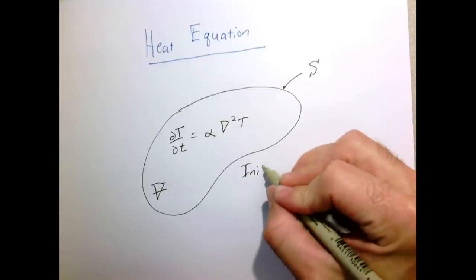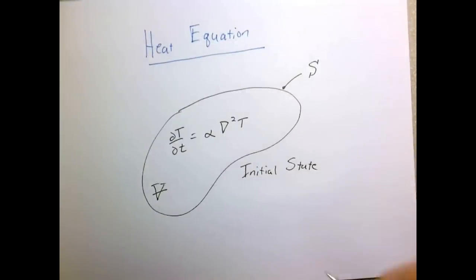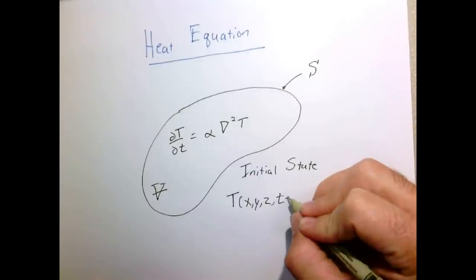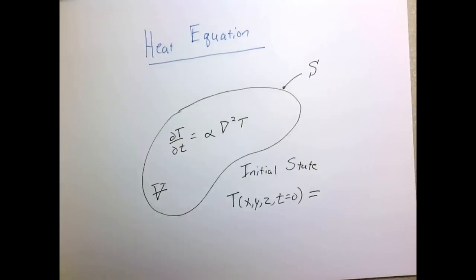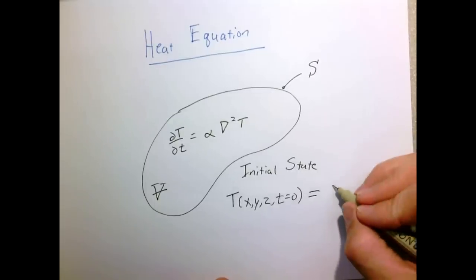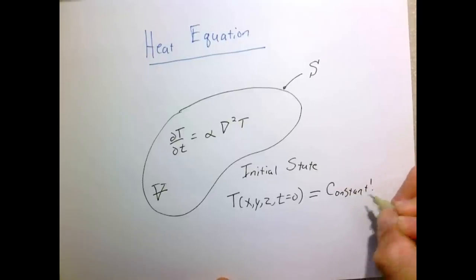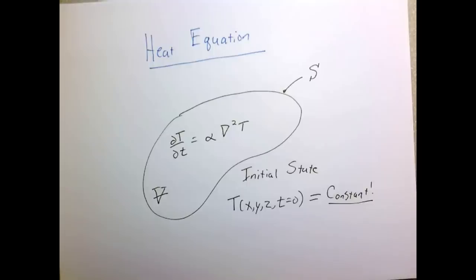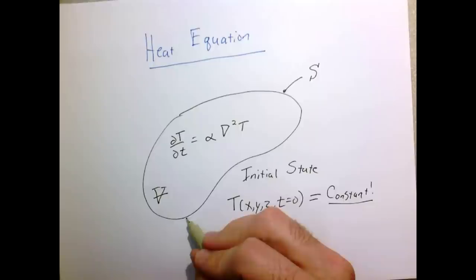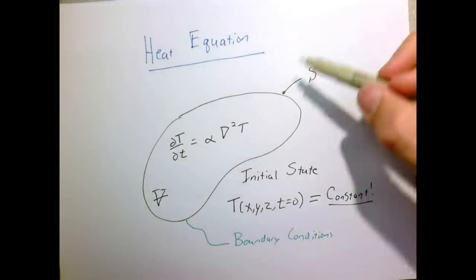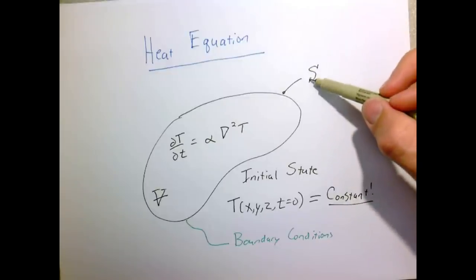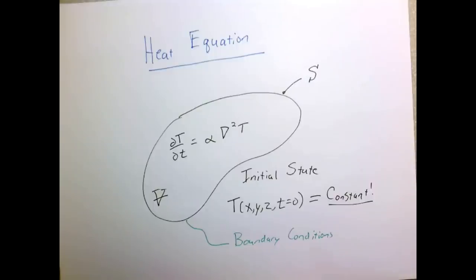In order to solve this equation, we need a couple of things. One is that we need the initial state. We might express this mathematically as the temperature as a function of x, y, and z at time equals zero is equal to something — some function that describes the temperature everywhere inside our volume. The most common thing we'll do is say that temperature is uniform everywhere initially, so that's simply a constant. The other thing we need is to describe what's happening everywhere on our boundary, so we'll need boundary conditions. The boundary conditions tell us how our solid is coupled to the universe around it, so everything outside our surface S somehow couples and determines what's going on inside. So whenever we solve our problem, we need the initial state and the boundary conditions.